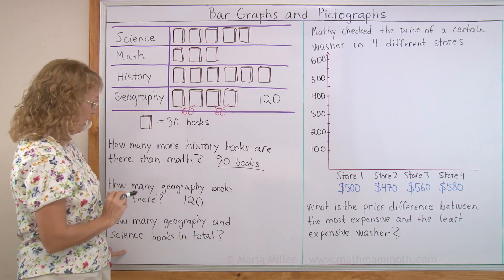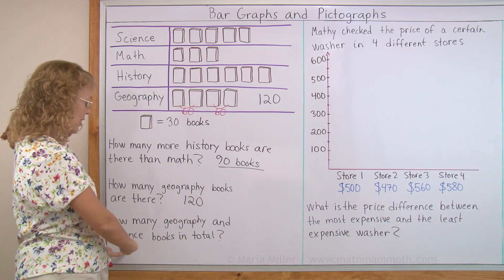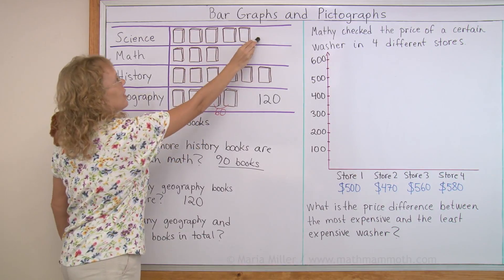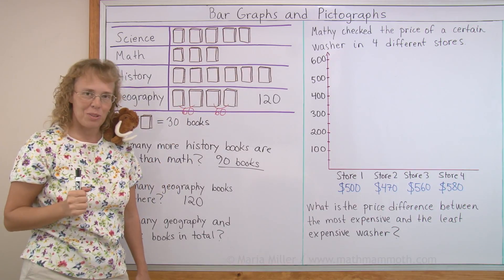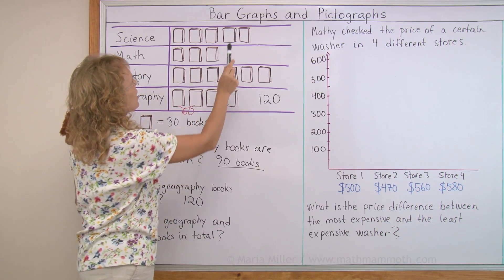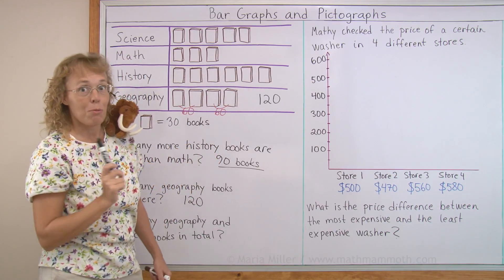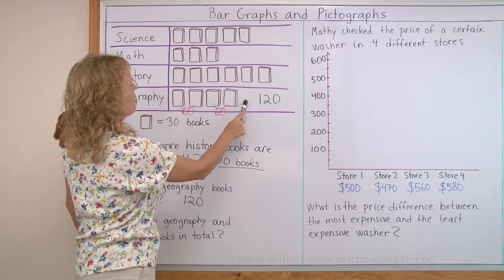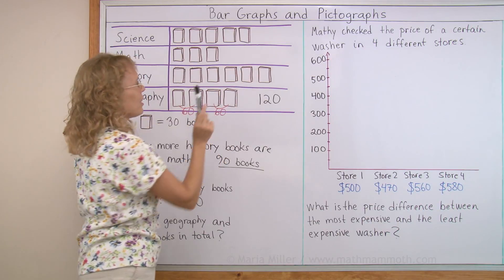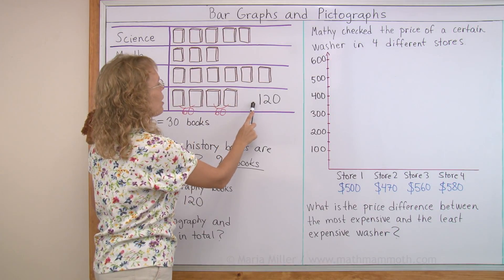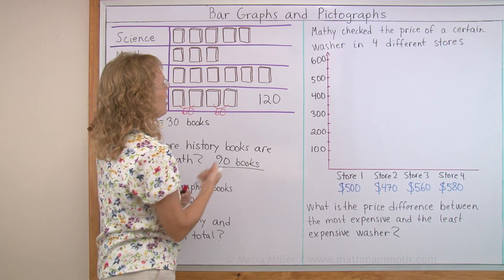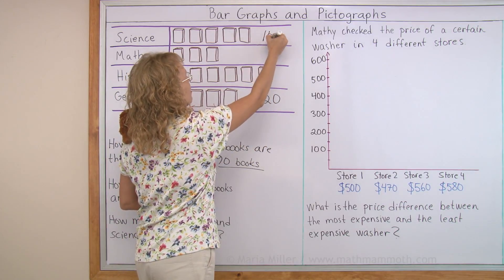And then lastly, how many geography and science books are there in total? We already solved how many geography books there are. Now when you look at the science books, there's just one picture more than geography. Just one picture more. So to figure out how many science books there are, I just take this 120 and add 30, right? One picture means 30. 120 plus 30 makes 150.